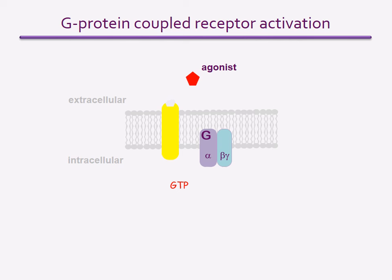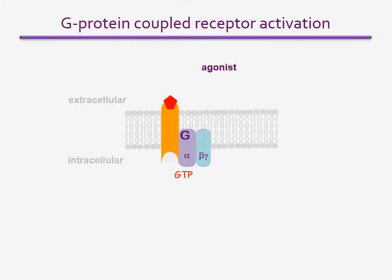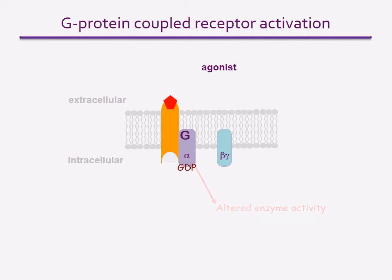There is one type of ligand binding assay that does give information about a functional effect — that is a specific assay for G protein coupled receptor activity. When a G protein coupled receptor is activated, agonist binding causes a conformational change in the receptor protein such that it binds to and activates a G protein. This activation involves binding of GTP to the protein, which is then gradually hydrolyzed to GDP, which then dissociates from the G protein to end its activity.